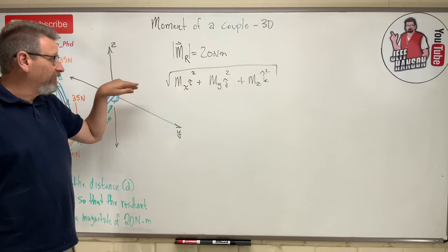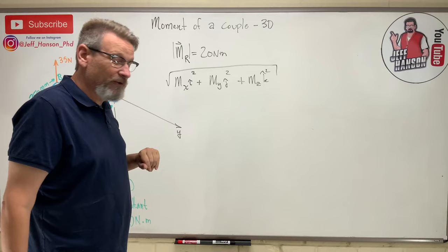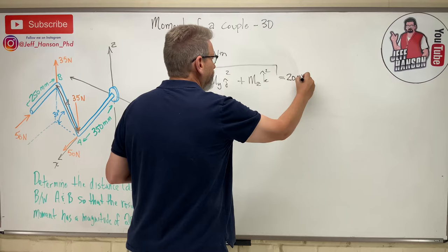Just like we do the magnitude of a vector, the magnitude of the moment works the same way. So we're going to find the things that make me spin around the x, the y, and the z, square them, add them together, take the square root, and then that whole thing needs to equal 20.